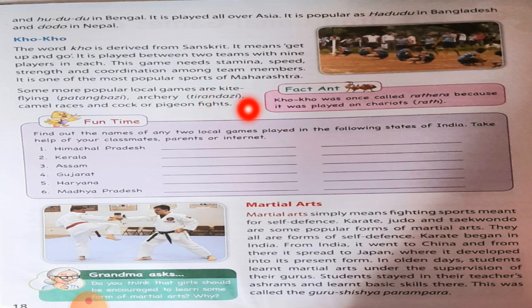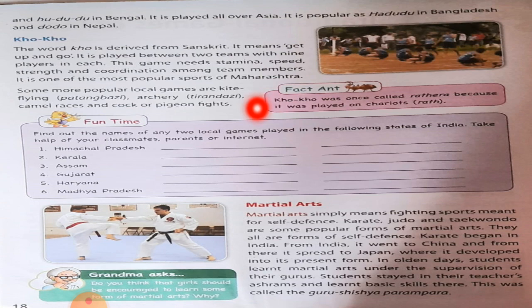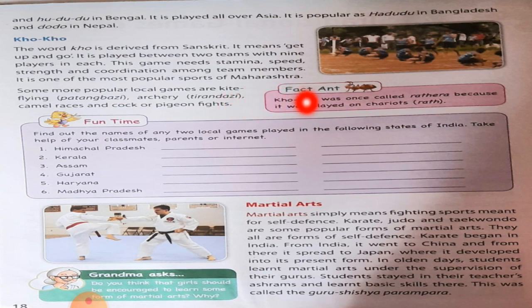Now the fact art. In fact art, we can read that Kho Kho was once called Rathera because it was played on Chariots — Rath. So, at one time Kho Kho was once called Rathera because it was played on Chariots, which means Rath.